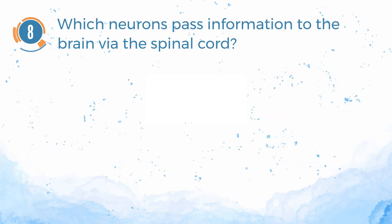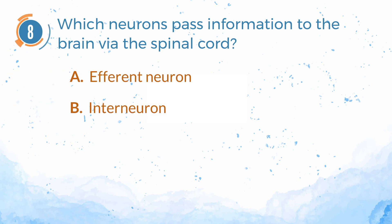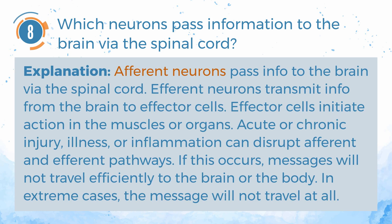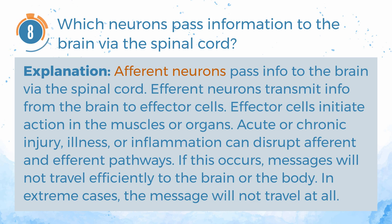Number 8. Which neurons pass information to the brain via the spinal cord? A. Efferent neuron. B. Interneuron. C. Afferent neuron. The answer is C — afferent neuron. Afferent neurons pass information to the brain via the spinal cord. Efferent neurons transmit information from the brain to effector cells, which initiate action in the muscles or organs. Acute or chronic injury, illness, or inflammation can disrupt afferent and efferent pathways. If this occurs, messages will not travel efficiently to the brain or the body, and in extreme cases, the message will not travel at all.